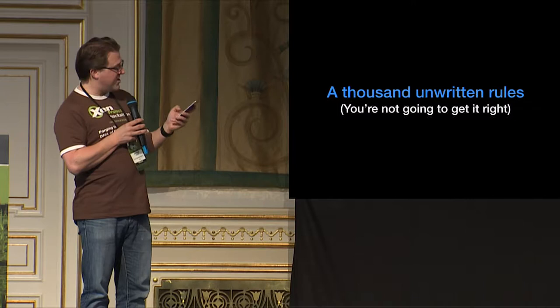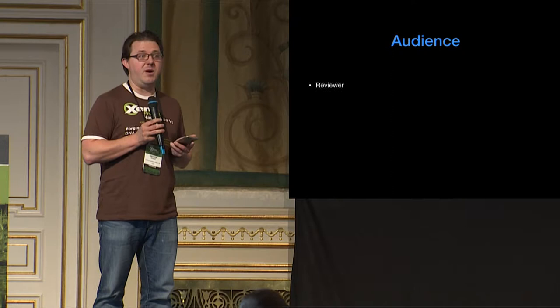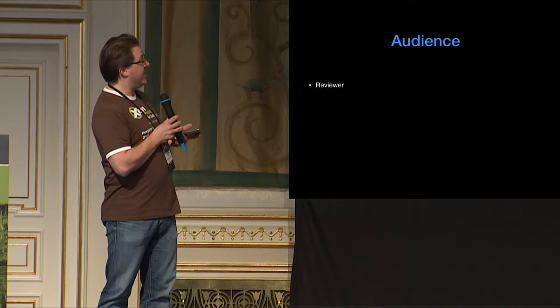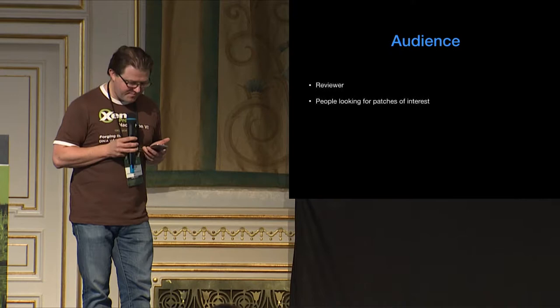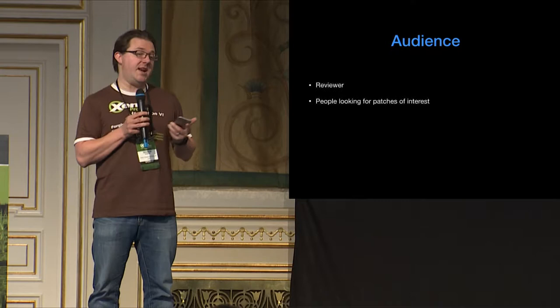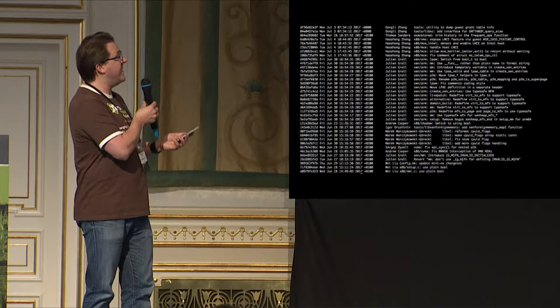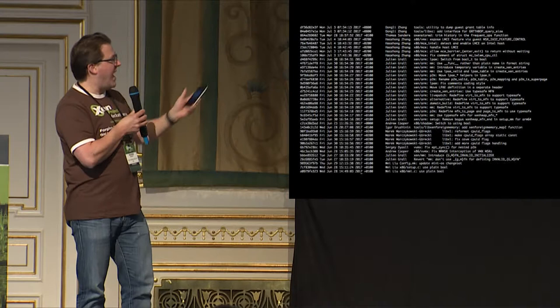As you're writing a patch, think about the audience. There are three different audiences you should be thinking about. The first is the reviewer — the person reviewing the code who decides whether it's going to go in. The second is people looking for patches of interest: either they're scanning the mailing list to decide which patches to review, scanning for features they want to backport, or scanning for bug fixes. Typically someone would see just one line — a single-line summary — so you want that one line to be just enough to allow someone to know whether they need to look in more detail.